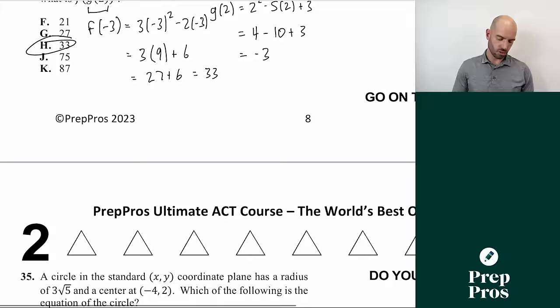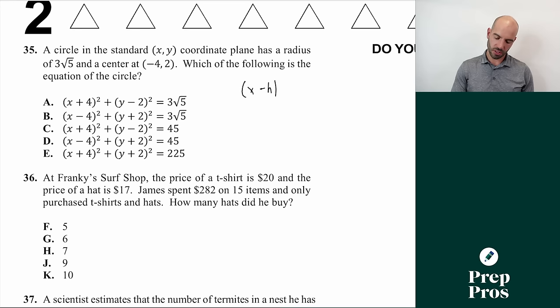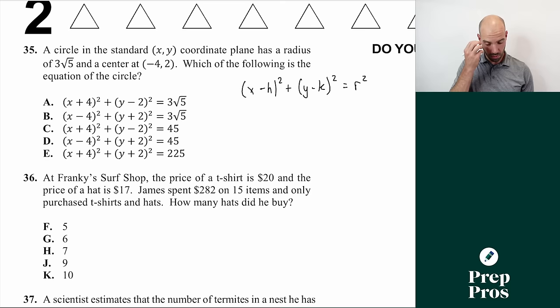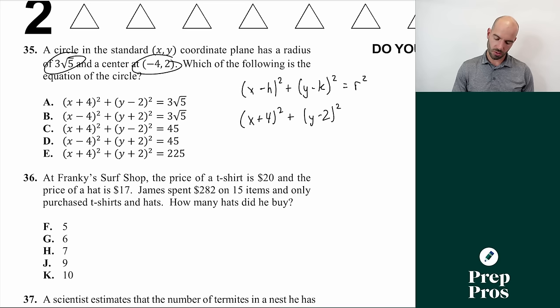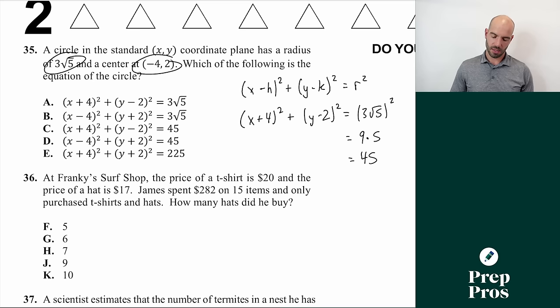Number thirty-five: write the circle equation given center (-4, 2) and radius 3 root 5. The full circle equation is (x - h)² plus (y - k)² equals r². Substituting: (x minus -4)² plus (y - 2)² equals (3 root 5)². Since 3 squared is 9 and root 5 squared is 5, the right side equals 45. We're looking for (x + 4)² plus (y - 2)² equals 45. The answer is C. Don't worry if the same letter appears as the answer several times in a row — just trust your work.